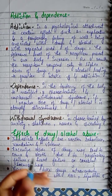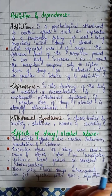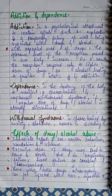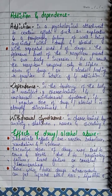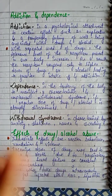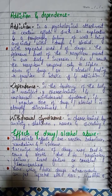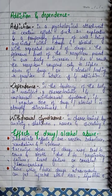Effects of drugs and alcohol abuse: Immediate effects include reckless behavior, vandalism, and violence. Excessive doses of drugs may lead to coma and death due to respiratory failure, heart failure, and cerebral hemorrhage.